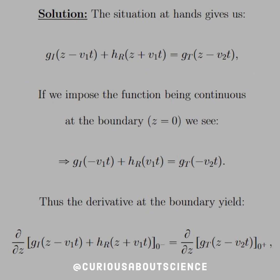All right, so with that, the situation at hand gives us we have the incident wave traveling to the right, and the reflected wave traveling to the left, and the transmitted wave traveling to the right. So if we impose the function be continuous at the boundary, or z equals zero, we see that we have g_I of negative v_1 t plus h_R of v_1 t is equal to g_T of minus v_2 t.